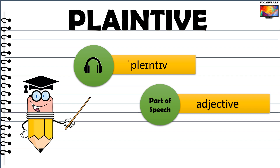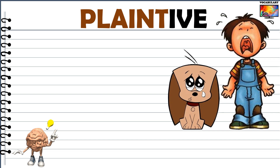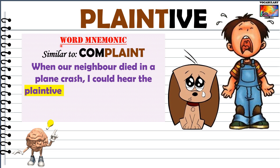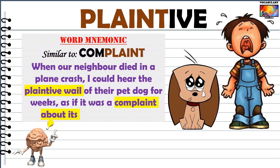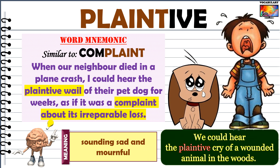Next, we have the word plaintive, which is used as an adjective. For learning this word, pay attention to its starting sound — plaint is similar to the word complaint. In fact, both the words plaintive and complaint share their origins. The word plaintive is almost always used to describe a plaintive cry or a plaintive tone, which means expressing sorrow or grief. For example: when our neighbour died in a plane crash, I could hear the plaintive wail of their pet dog for weeks, as if it was a complaint about its irreparable loss. Plaintive means sounding sad and mournful. Another example: we could hear the plaintive cry of a wounded animal in the woods.